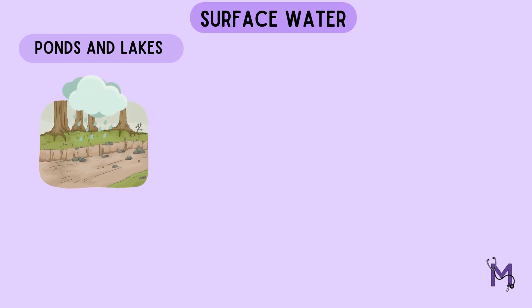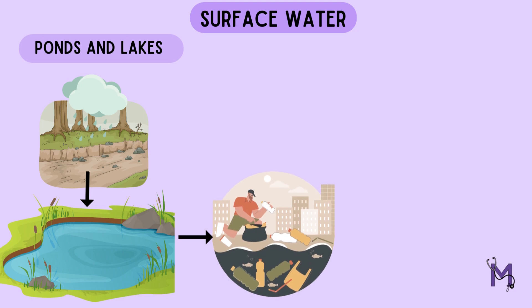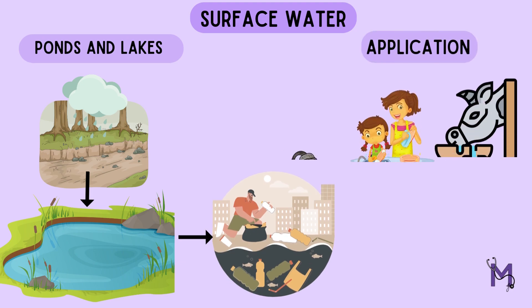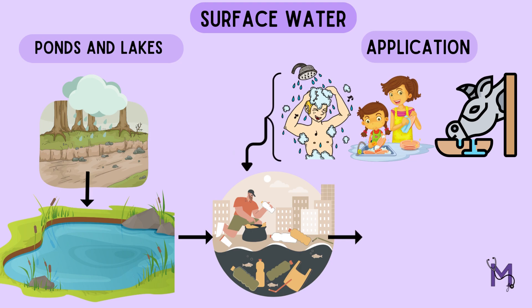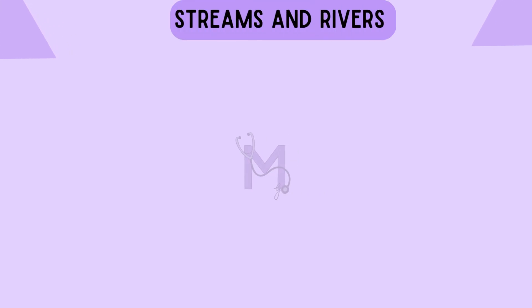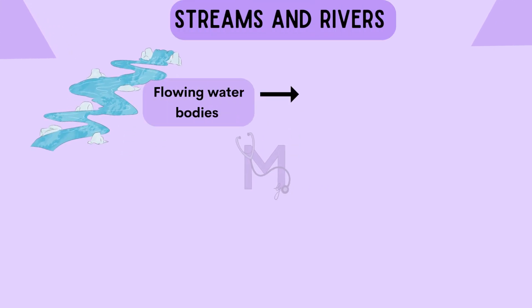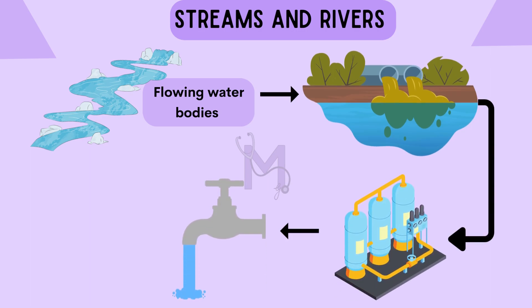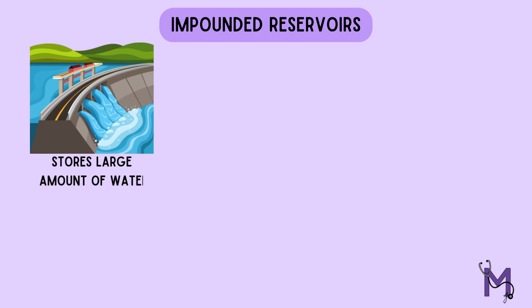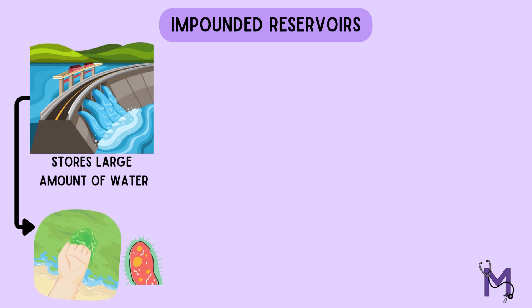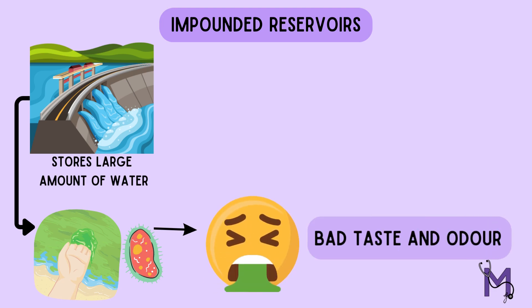The next source is surface water. Going back to our geography classes, there are several types of water bodies available, which all account for surface water. First are the ponds and lakes, which are natural excavations where water gets collected. But these water bodies are stagnant and do not flow, which may lead people to use them for domestic purposes, in turn getting the water contaminated and thus not being potable. Similarly, streams and rivers, even though they are flowing water bodies, are usually grossly polluted and will require purification treatment before being fit for drinking. Impounding reservoirs are artificial lakes or constructed dams which store large amounts of surface water and can later be used for consumption. The only disadvantage of this type is the growth of algae and other microorganisms, which will then impart bad taste and odour to the water.